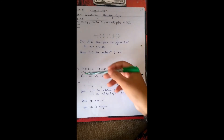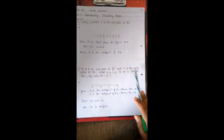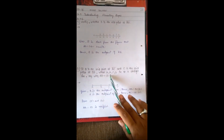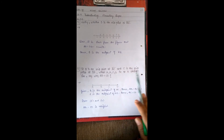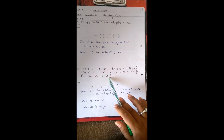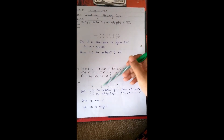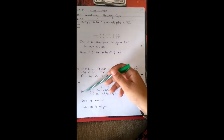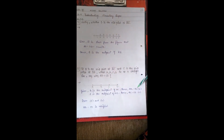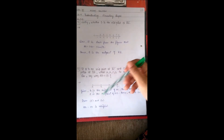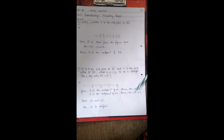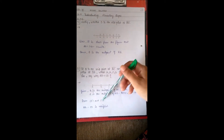Question 6: If B is the midpoint of line segment AC and C is the midpoint of line segment BD, where A, B, C, D lie on a straight line, show why AB = CD. Since B is the midpoint of AC, AB = BC (result 1). Since C is the midpoint of BD, BC = CD (result 2). From results 1 and 2, AB = CD is verified.